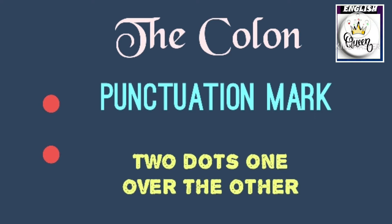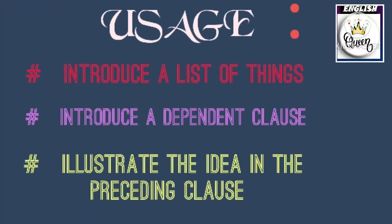The colon is a punctuation mark. Its formation is two dots, one over the other. As for its usage, it introduces a list of things — that is, it introduces a dependent clause. The main sentence is a meaningful sentence, and the dependent clause illustrates the idea in the preceding clause.